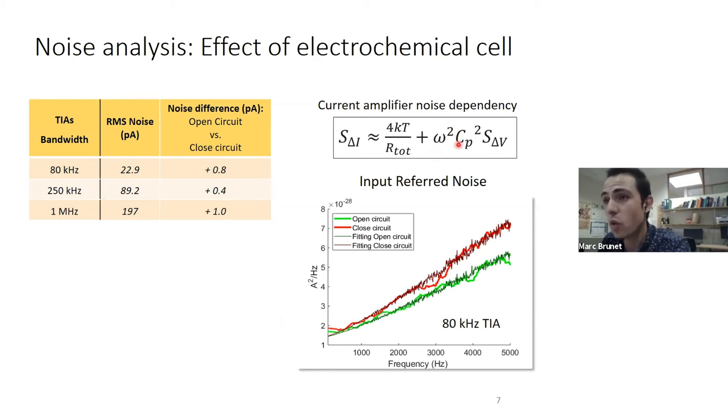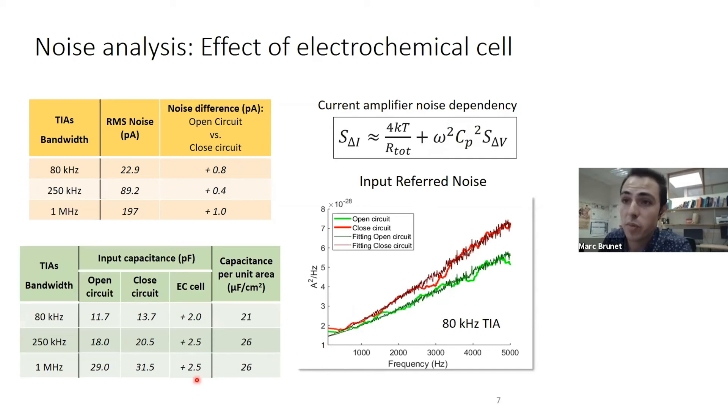We also wanted to quantify the contribution of forming the electrochemical cell to the input capacitance terms. Mainly, we fit this equation to the input-referenced noise, which is a Fourier analysis of the current traces. By doing this fitting, it's possible to extract the input capacitance in open circuit and closed circuit, and therefore we can extract the capacitance due to the formation of the electrochemical cell, which agrees with the capacitance expected from the double layer formation on the electrode.